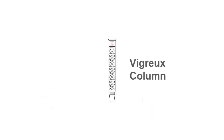Sometimes people will go so far as to use a column that has little fingers of glass on the inside to make sure that there's even a greater surface area for those equilibrations to take place. That type of a column is called a Vigreux column.